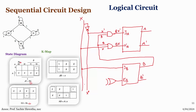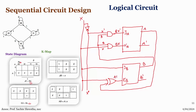The inputs for the KB gate are X and A, drawn from their respective lines. This is our final sequential circuit.